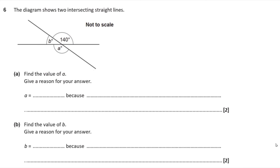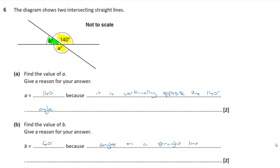Question 6. The diagram shows two intersecting straight lines with angles A, B, and 140°. Find the value of A. A and the 140° angle are vertically opposite, so A is 140° because vertically opposite angles are equal. Find the value of B. B and 140° lie on a straight line and sum to 180°, so B must be equal to 40°. The reason is that angles on a straight line sum to 180 degrees.